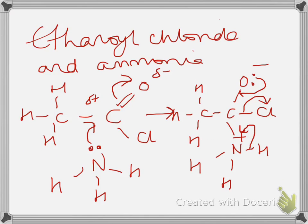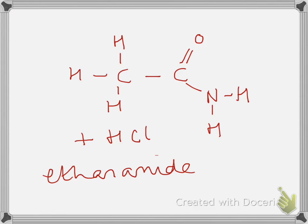If we have a look at ethanoyl chloride with ammonia, it's the lone pair on the nitrogen as the nucleophile attacking the electron-deficient carbon. Again, we get the intermediate. We get the deprotonation there onto the nitrogen, reforming of the carbonyl group and the chlorine becoming a chloride ion. So we end up with HCl and ethanamide and amide.